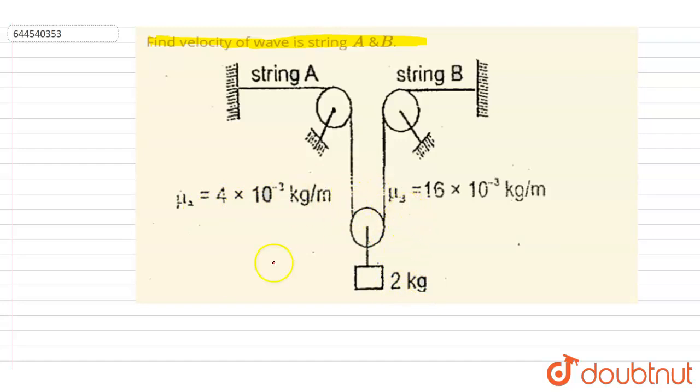So if you draw the FBD on this system, we will write down that the upward force equals the downward force. The downward force on this part is 20 Newton from gravity on the 2 kg mass, and here we have tension T1 and T2.